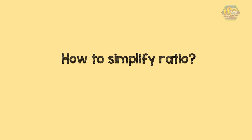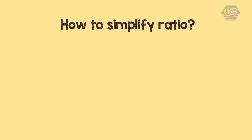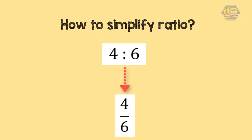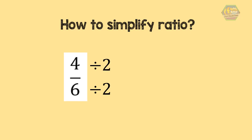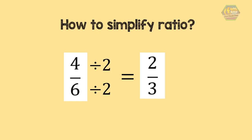Ratio can be simplified — but how? Take a look at this example. If you have a ratio of 4 is to 6, we can also write it as 4 divided by 6. To simplify, 4 and 6 are both divisible by 2. So if we divide both the numerator and denominator by 2, we get 2 over 3. Since 2 over 3 has no common factor, the simplest form of the ratio 4 is to 6 is 2 is to 3, or 2 over 3.